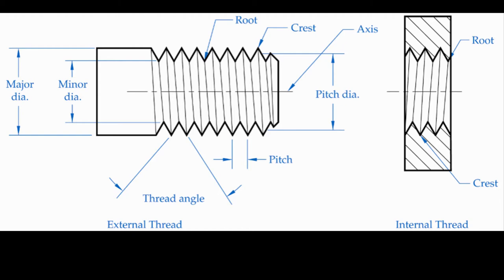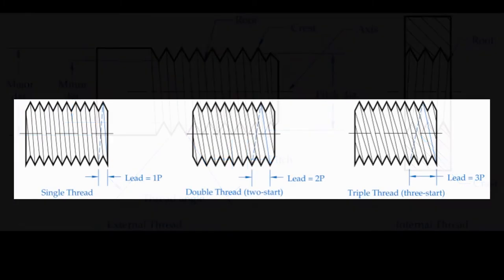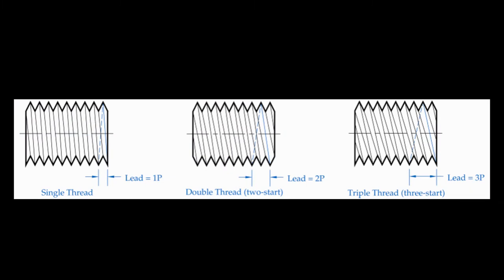The pitch is the distance from one point on a screw thread to the same point on the next thread. American inch threads are specified by the number of threads per inch, not pitch. Metric threads are measured by pitch. The lead is how far a thread advances when the threaded part is rotated one complete revolution. For most threads, the lead and pitch are equivalent. For a multiple start thread, you get more lead — for a two-start thread, you turn the threaded member 360 degrees and it moves twice as far as the pitch.